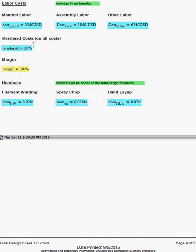On page 9, there are inputs for labor costs, for the mandrel labor, for the assembly labor, and any other type of labor. And that's the cost of other labor.